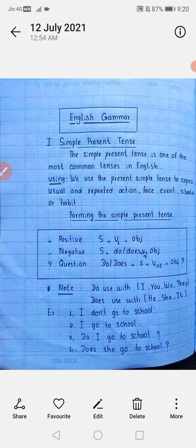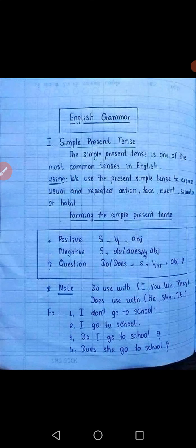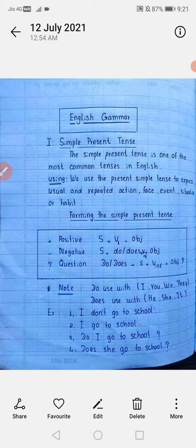Interrogative sentences में helping words जैसे what, where, how को पहले use करते हैं और question mark लगाते हैं। तीसरा है imperative sentence — जिन sentences से order, request, advice, या suggestion का पता चले। जैसे: 'Sit down here,' 'Please give me a pen,' 'Switch off the fan।' ऐसे sentences में main verb का use पहले किया जाता है।